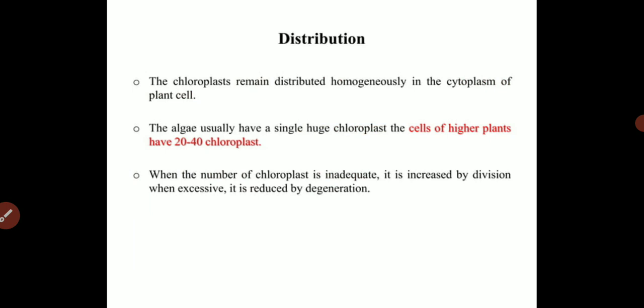This slide talks about the distribution of chloroplast. Chloroplast is distributed homogenously in the cytoplasm of the plant cell. A particular plant cell will contain more than 20 individual chloroplasts, and the number varies according to the cell's location in the plant. However, algae usually have a single huge chloroplast in the center of the cell, while higher plants contain 20 to 40 chloroplasts per cell.